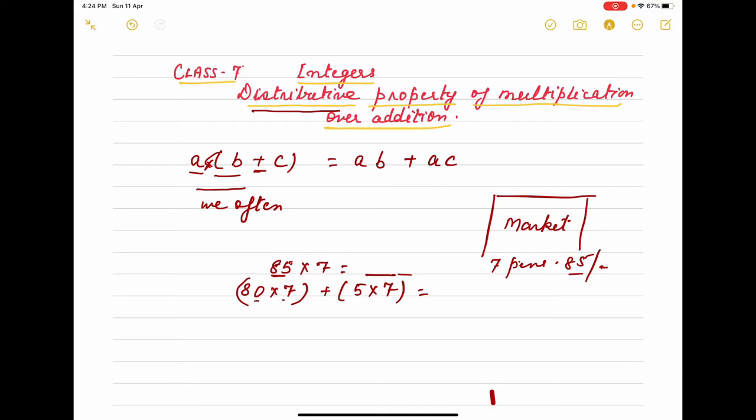Like 80 into 7 is 560 and 5 into 7 is 35. So this number you can calculate mentally also and then say that cost, total price you are giving to the shopkeeper 595. Same thing we apply in distributive property also here. But only the difference is maybe we have negative numbers or integers also. But process is same. Here it is not necessary that you break 85 only. You can break 7 also. According to your convenience. First number or second number you distribute and then find out.